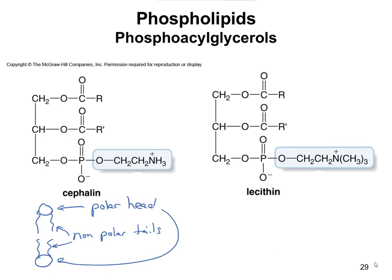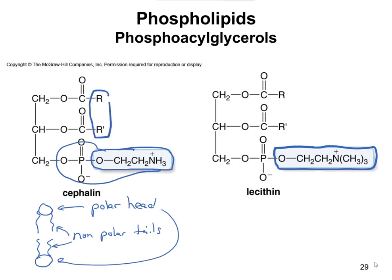The polar head group is going to be this part of the molecule. The nonpolar tails are going to be these R groups here — those would be the nonpolar tail groups. The part that's not in any circle, where the glycerol backbone is, is kind of in between the two, though I would say that's more in the polar head group as well.